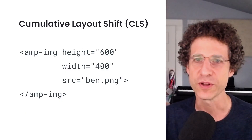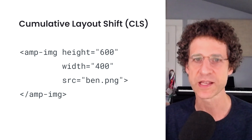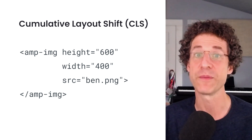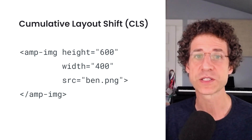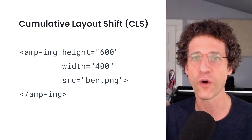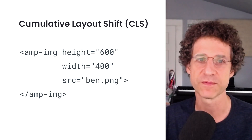For Cumulative Layout Shift, AMP's layout system involves declaring the size of every element in advance so that when things load, they just pop into their spaces without making their neighbors move. AMP also tends to require a user interaction before you can change what's on the page. Of course, you can meet Core Web Vitals thresholds without using AMP, but AMP can make it much easier.